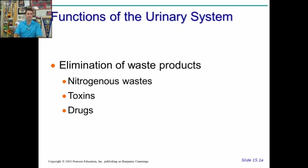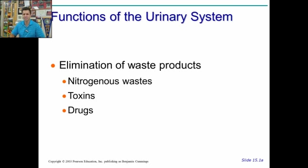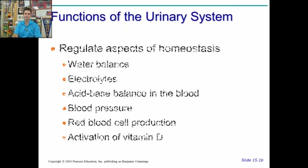Okay, how does this stuff work? This is part one: Functions. We're basically eliminating waste — that's the whole thing. And in that waste includes nitrogenous waste, these are nitrogen-based compounds. Specifically we'll talk about urea, as well as toxins — you pee out all kinds of toxins, and drugs. By toxins we also mean excess vitamins and garbage that you take into your system. This is why you can also do a pee test for drugs, for cocaine or whatever, because it comes out in your system.